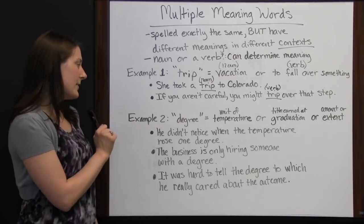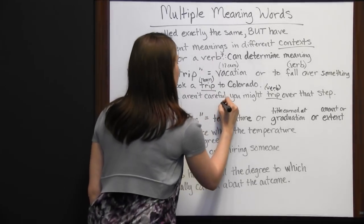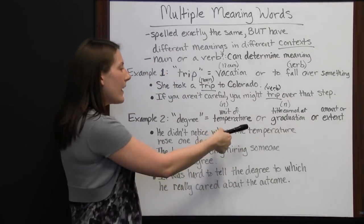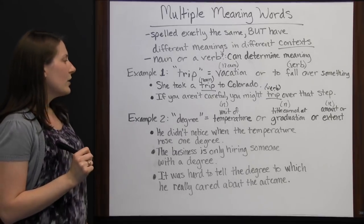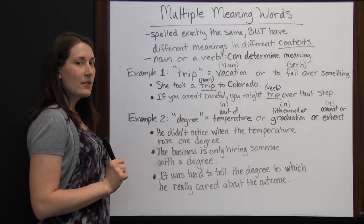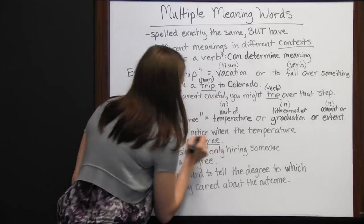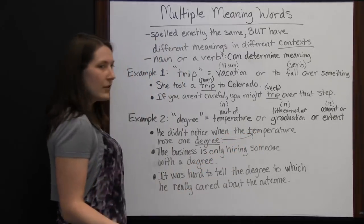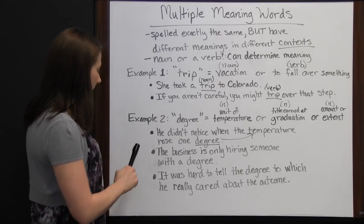Let's look at another example: 'degree.' Degree has at least three different meanings, and this one's a little trickier because they are all nouns. Unit of temperature is a noun. A title earned at graduation — if you earn a degree in astrophysics — that is a noun. Some amount or extent of something is a noun. So finding the part of speech won't help you determine meaning with this particular example, but reading the sentence and using context clues can help you figure out which one we're talking about.